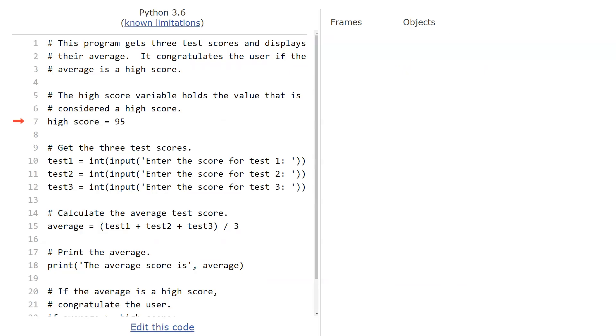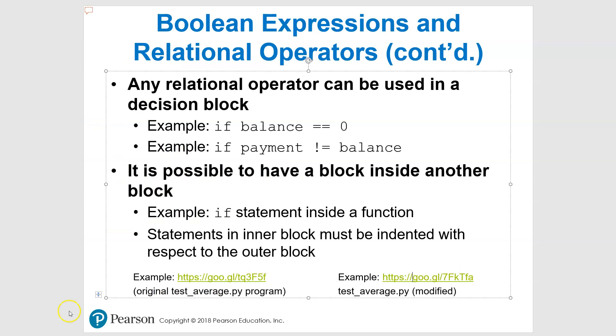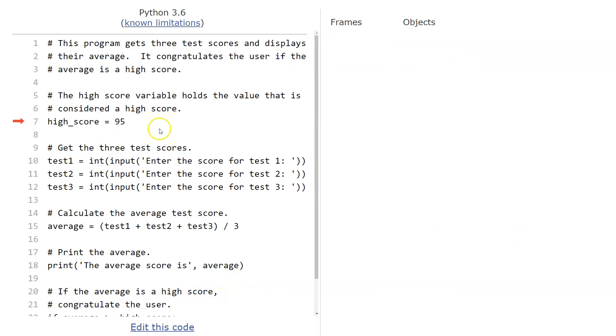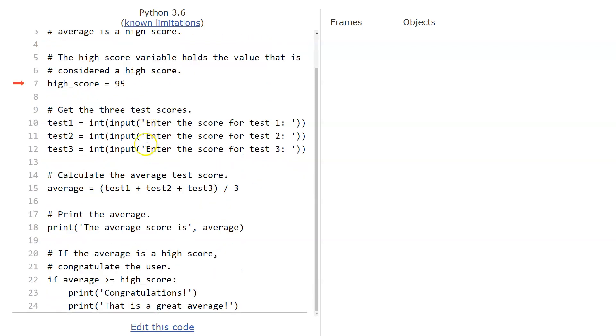This is the link on the left-hand side of that PowerPoint. So this is the original test average program that we have. And you'll notice on this one, we'll just take a look at the code very quickly. So three test scores displays an average, congratulates them if the average is a high score. So high score, here we go with this. Oh, this is terrible. This should be all caps. So we have high score set here at 95. Remember if we're going to use a constant, this is something that technically should be a constant, this would be all capital letters in here. So just remember that.